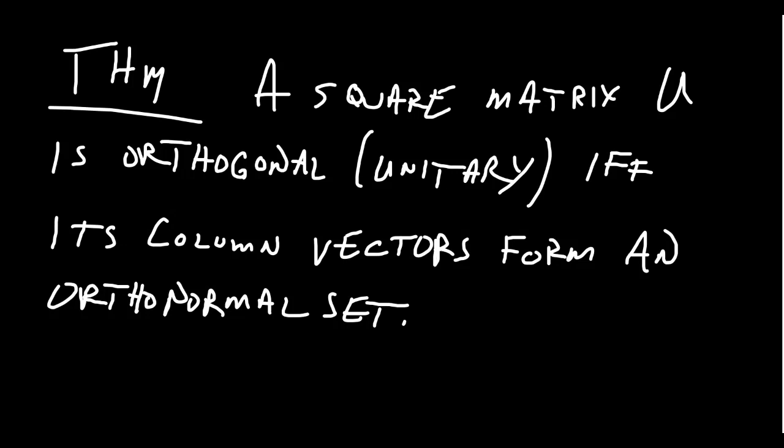Why the name orthogonal matrix? It comes from this theorem: a real square matrix is orthogonal, or a complex matrix is unitary, if and only if the column vectors of the matrix form an orthonormal set. An orthonormal set means every vector is a unit vector and dot products between distinct vectors equal zero. That's why we call these orthogonal matrices — though the columns actually have to be orthonormal, not merely orthogonal, which raises the question of why we don't call them orthonormal matrices.